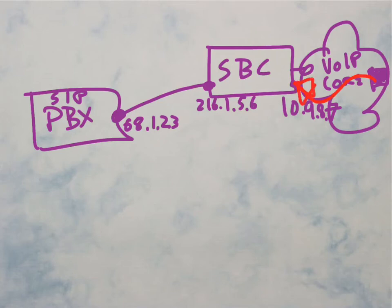The session border controller has to be configured to route that through to the PBX side of the network, and then we send the call to the PBX from 216.1.5.6 to the PBX IP address of 68.1.2.3.